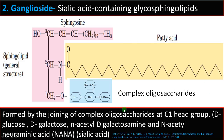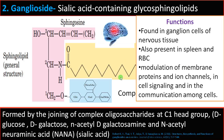In ganglioside, complex oligosaccharides are joined to the C1 head group OH of the sphingosine backbone. Gangliosides are found in ganglion cells of nerve tissue and are also present in spleen and RBCs. Their functions include modulation of membrane proteins and ion channels, cell signaling, and cell-to-cell communication. Loss of ganglioside, especially retinal ganglioside, is often associated with neurodegenerative diseases like Alzheimer's and Parkinson's.